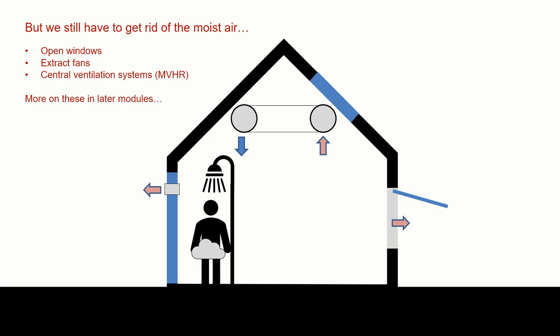The normal way to deal with that is either through passive methods or active methods. Passive means there's no mechanical apparatus involved—a passive method might be to open a door, a window, or a roof light.